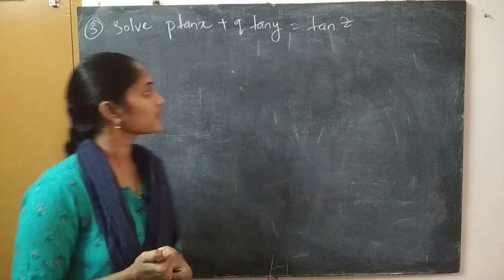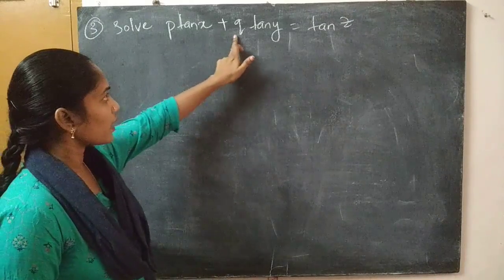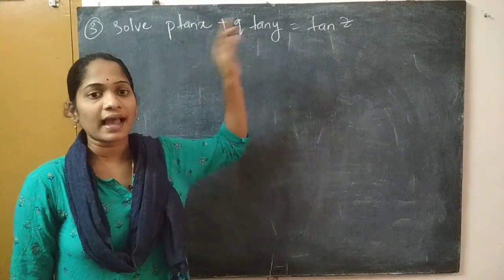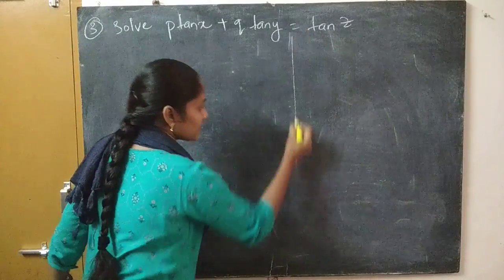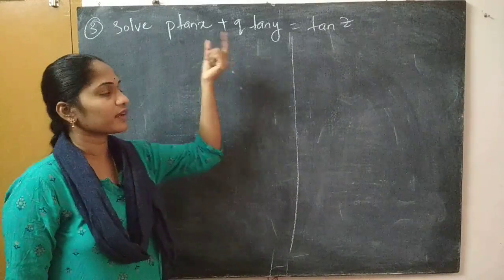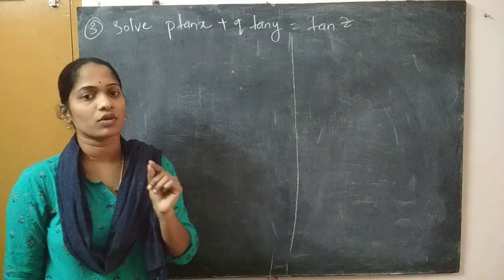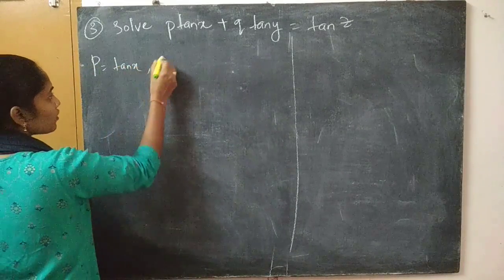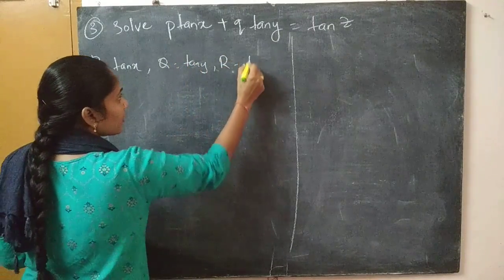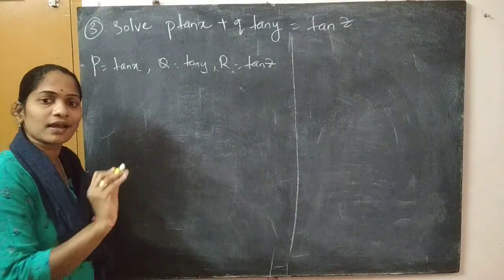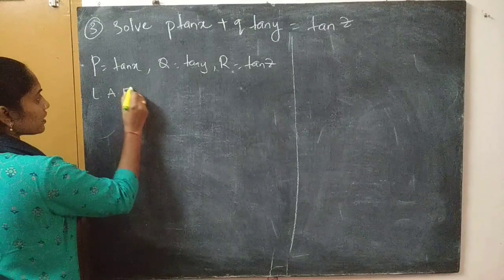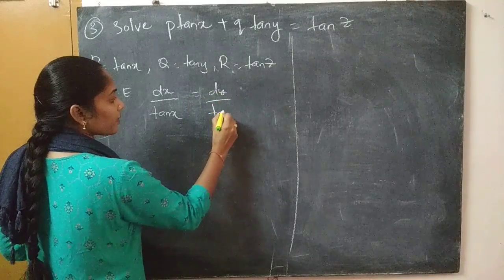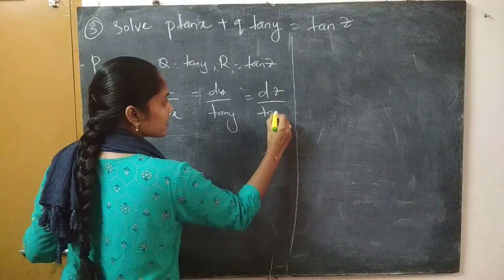Let us see the next problem. The third problem is: p·tan(x) plus q·tan(y) equals tan(z). It may look difficult because of the trigonometric functions, but it is quite simple. Comparing with the quasi-linear PDE form: capital P equals tan(x), capital Q equals tan(y), capital R equals tan(z). Write Lagrange's auxiliary equation: dx by tan(x) equals dy by tan(y) equals dz by tan(z).